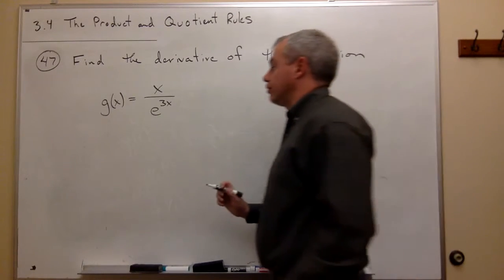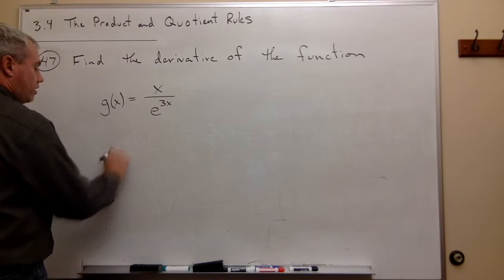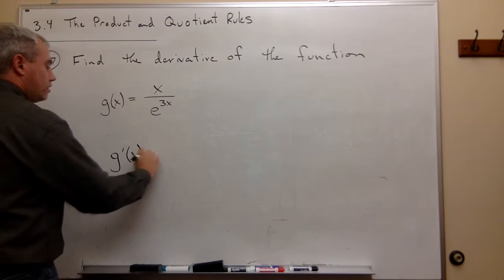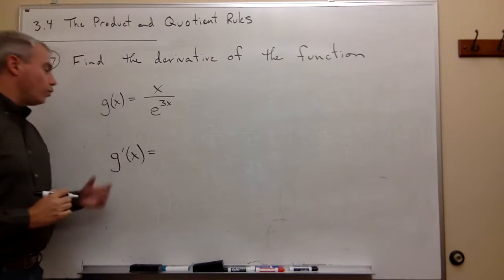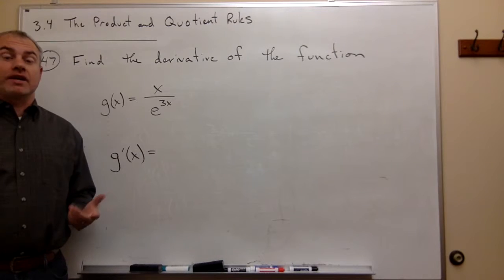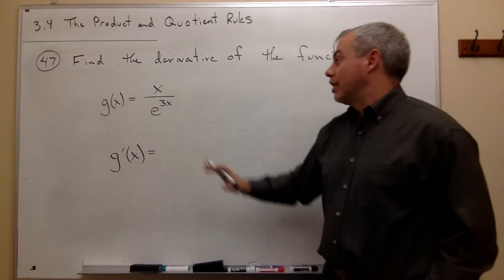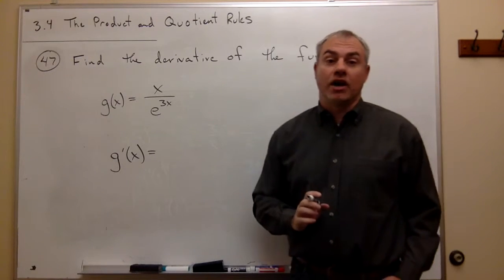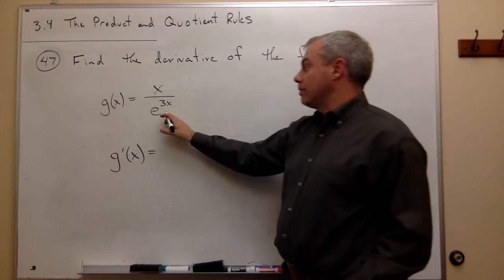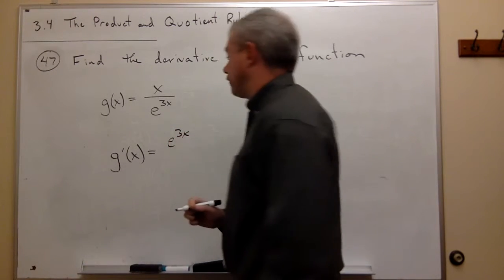So if we're going to use the quotient rule for this thing, then we're going to say g prime of x is equal to, and when I use the quotient rule, we'll remember that the first thing we write down is we always just write down whatever it is that's on the bottom, and we leave it alone. So let's write down what's on the bottom, which is e to the 3x left alone.